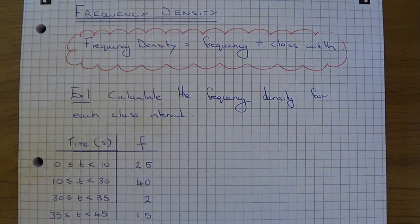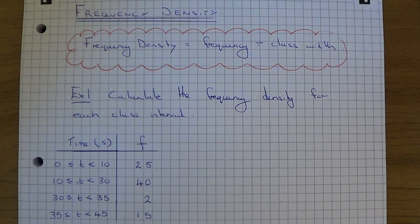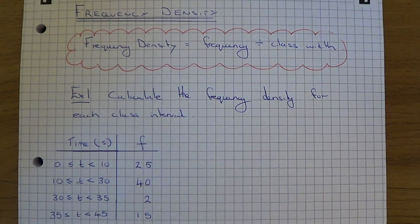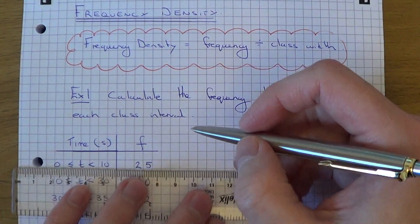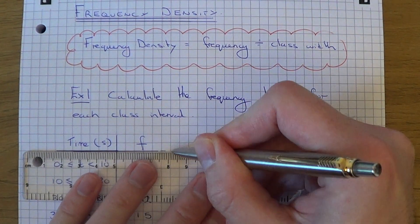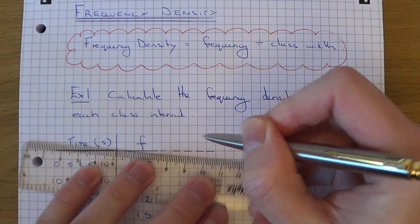Let's have a look at an example. We have a frequency table on the running times of a group of athletes. The first thing I want to do is add a new column, and I'm going to calculate the class width.